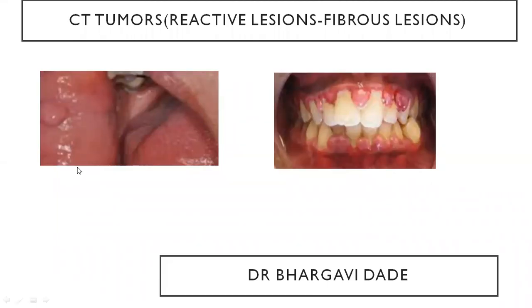Hello, everyone. Welcome to my channel. Today I'm going to talk about connective tissue tumors, and this class is going to be in two parts. The first part is going to cover reactive lesions and fibrous lesions, and I'll be covering neuronal lesions, fat, and muscle lesions in my next class. So let's begin.